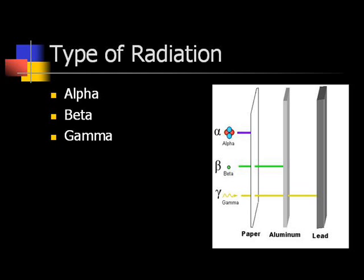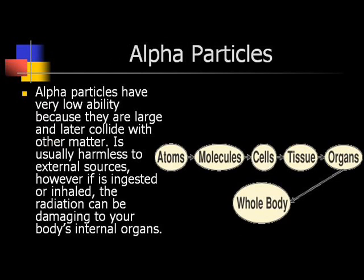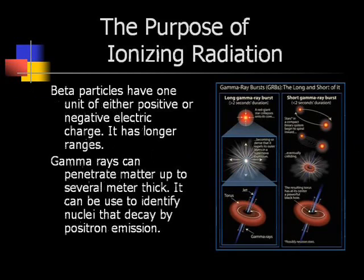Types of radiation. There are three types of radiation: alpha, beta, and gamma. Alpha particles have very low penetrating ability because they are large and readily collide with other matter. Alpha radiation is usually harmless to external sources; however, if it is inhaled, the radiation can be damaging to the body's internal organs.